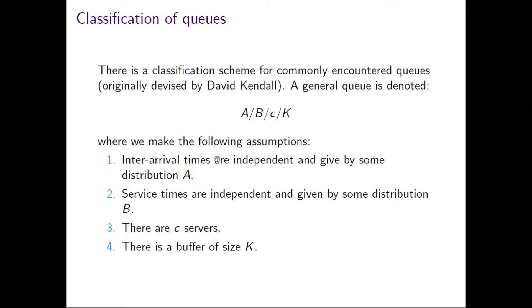The first letter describes the way that the inter-arrival times are distributed. For example, it could be a D, and that would say that they're deterministically distributed, so you know that customers arrive every ten minutes with no variation whatsoever.